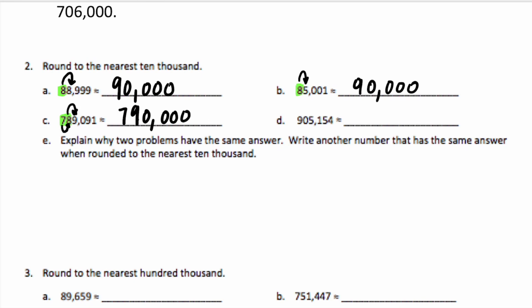For D, we have 90 ten-thousands, so this is between 900,000 and 910,000. I would round up to 910,000.